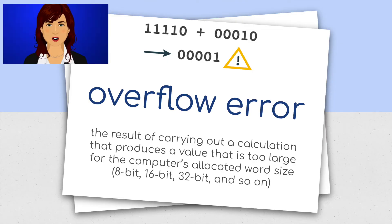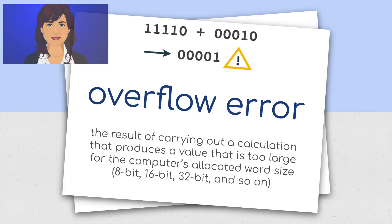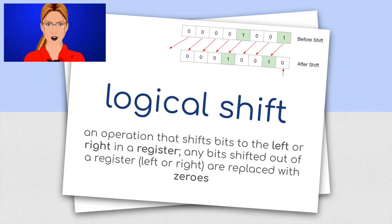An overflow error: the result of carrying out a calculation that produces a value that is too large for the computer's allocated word size — 8-bit, 16-bit, 32-bit, and so on. Logical shift: an operation that shifts bits to the left or right in a register. Any bits shifted out of a register, left or right, are replaced with zeros.